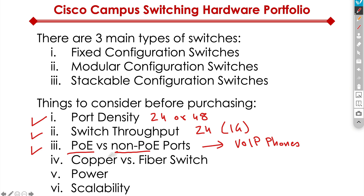You need to define how many ports you need, and you also need to decide whether you need a copper switch or a fiber switch. In a campus environment, a copper switch is very common. You may need a couple of fiber switches to connect different floors together, for example. You also need to consider power — do you need redundant power or a switch that has multiple power supplies in it?